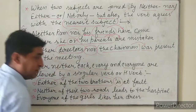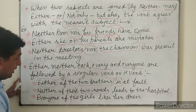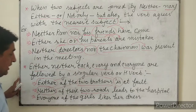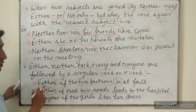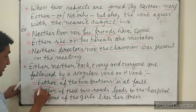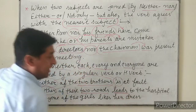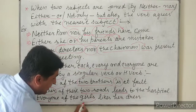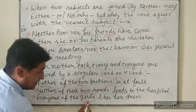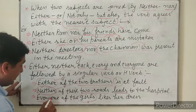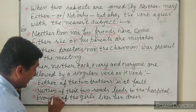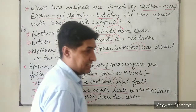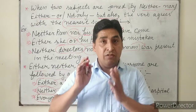'Neither of these two roads' — 'roads' plural में है, लेकिन subject के रूप में 'neither' use हुआ है, इसलिए verb singular लगेगी — 'leads.' अगर subject plural होता तो 'lead' होता, लेकिन 'neither' के साथ 'leads' आएगा। Next example: 'Everyone of the girls likes her dress' — 'girls' plural है, लेकिन 'everyone' subject है, इसलिए verb singular: 'likes.'